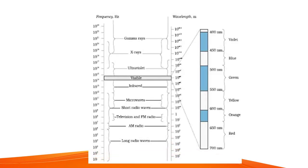Now we will discuss the electromagnetic spectrum, which arranges all rays in decreasing order of frequency or in increasing order of wavelength. Gamma rays have the highest value of frequency, then come X-rays, ultraviolet light, visible light, infrared rays, microwaves, short radio waves, television and FM radio waves, amplitude modulated radio waves, and long radio waves.